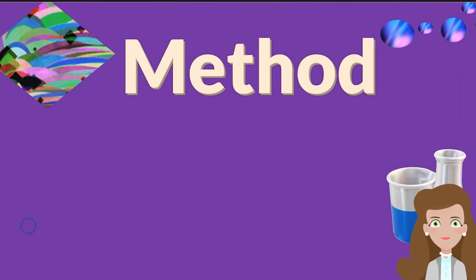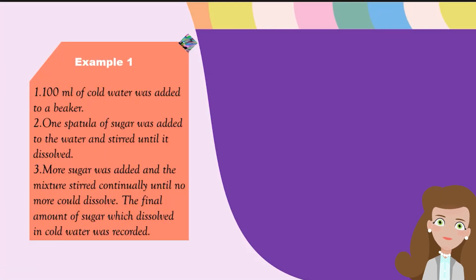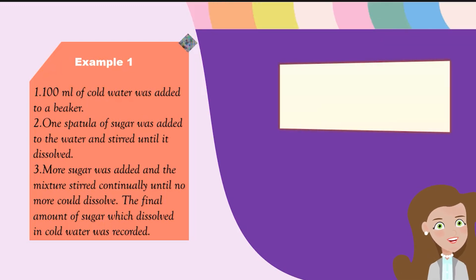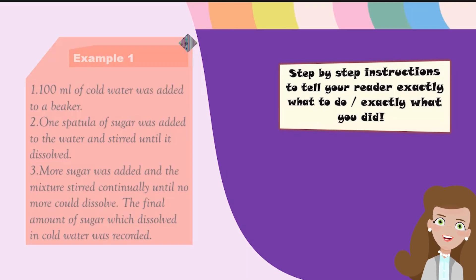Method, which is a detailed list of the steps in the experiment. The method is your step-by-step instructions to tell your reader exactly what to do or exactly what you did. It is a set of instructions that you can follow to carry out the experiment. You can write this in a series of steps that are numbered that the reader can follow through.